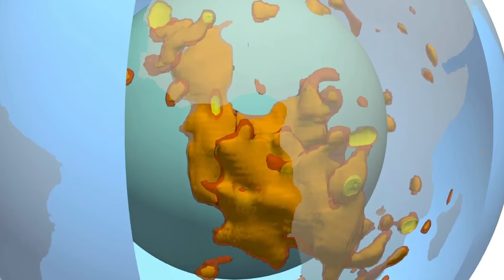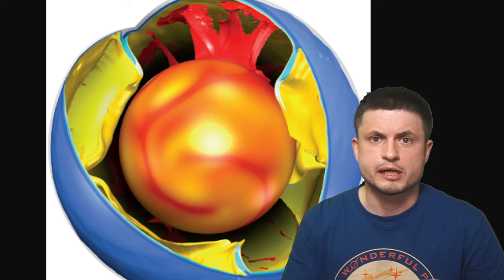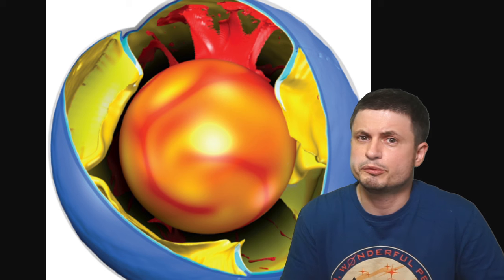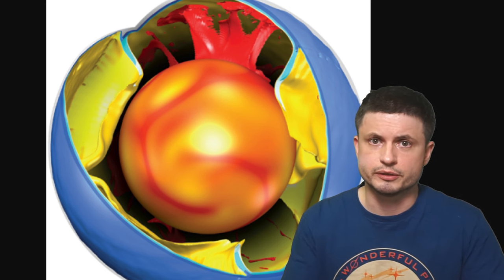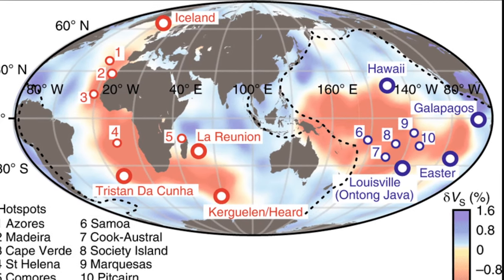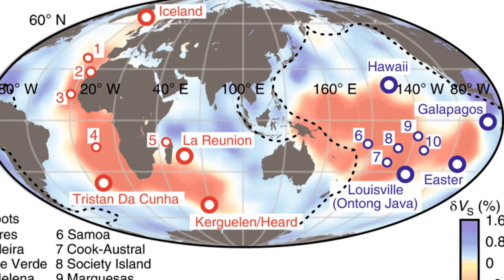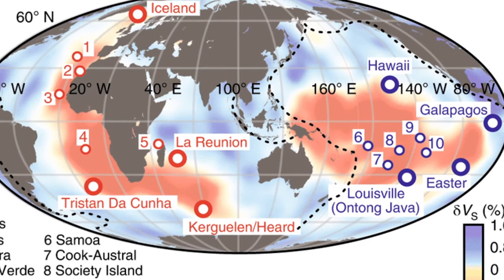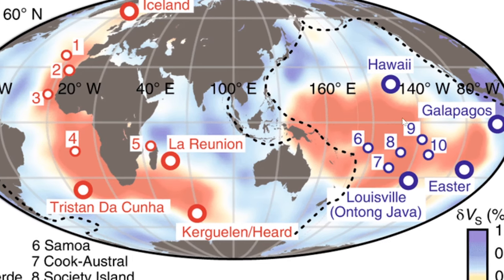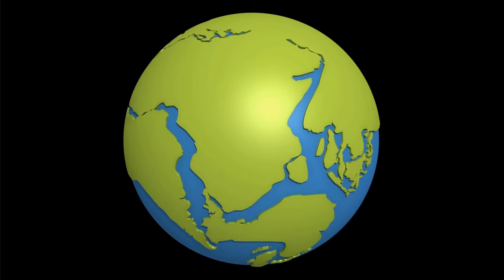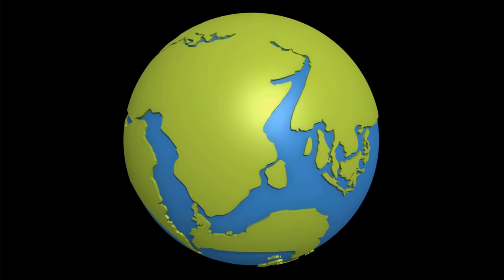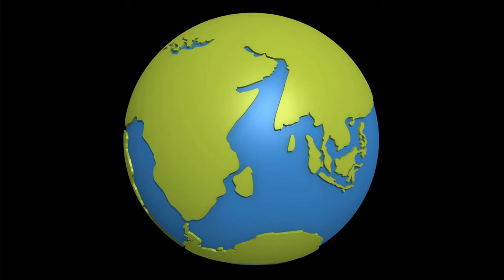They might not have actually been created in the same way. And on top of this, the African LLSVP seems to be a little bit less stable, which the authors believe might explain why there's a lot more intense volcanism in the regions around the African LLSVP compared to the regions in the Pacific, which then most likely affects how the continents move on the surface of the planet right now.